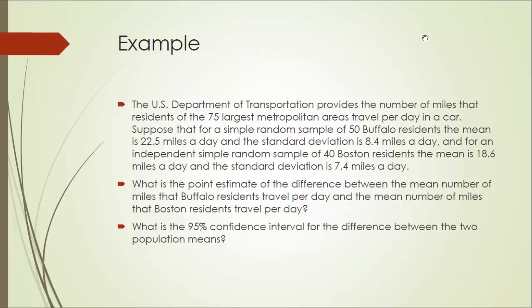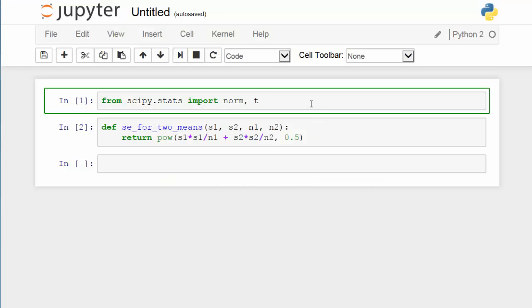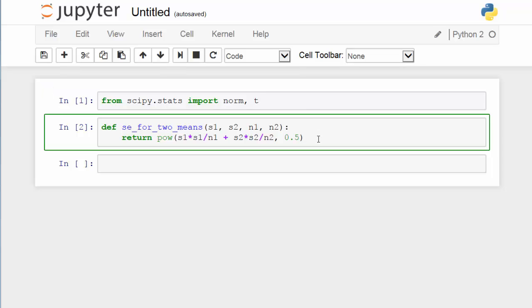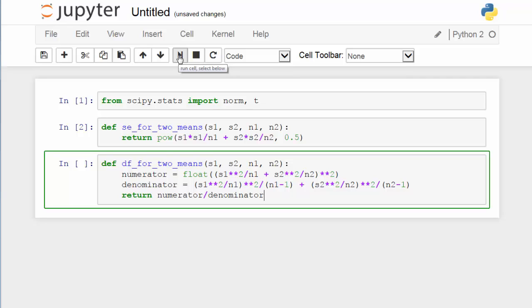Once again, we are going to switch to our IPython notebook. We are going to import t distribution from the scipy.stats package and we are going to define a simple function to calculate the standard error. And next, I am going to define a function to calculate the degree of freedom, the long ugly formula we see on the slide. Here is the function I am going to call when we need to calculate the degree of freedom.